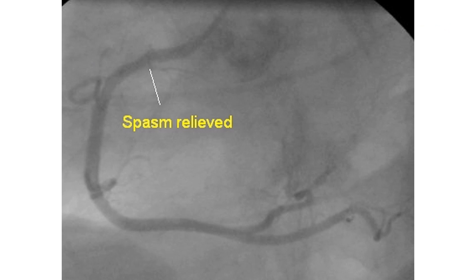Occasionally, intracoronary nitroglycerin is given to relieve the spasm before taking a repeat shot to demonstrate relief of spasm. This image shows the relief of spasm after administering intracoronary nitroglycerin.